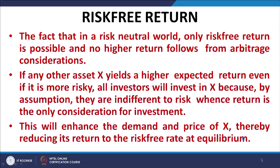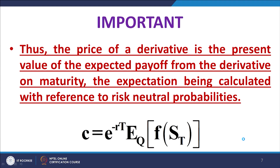Let us move on. Where we stand now is captured by the equation given at the bottom of the slide. It says that the value of a derivative — the value of a contingent claim at t equal to 0 — is equal to the discounted value of the expected value of its future payoff at maturity. That expected value must be calculated with respect to risk-neutral probabilities; that is very important.